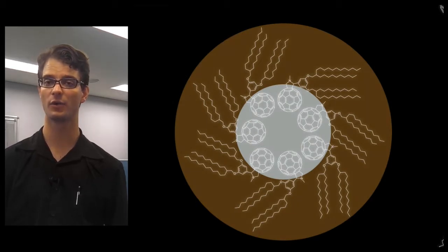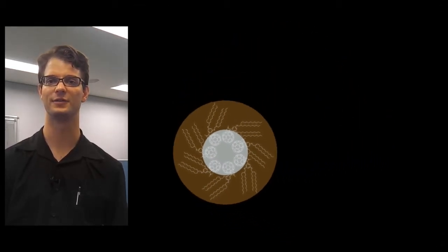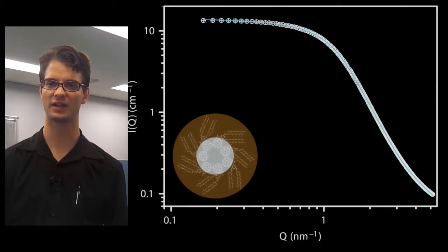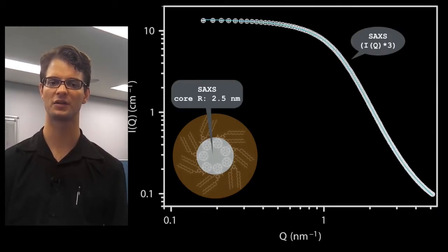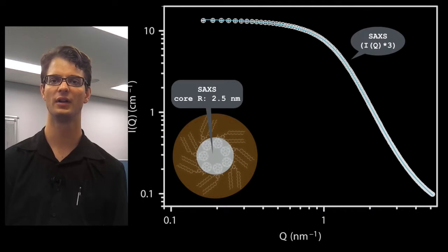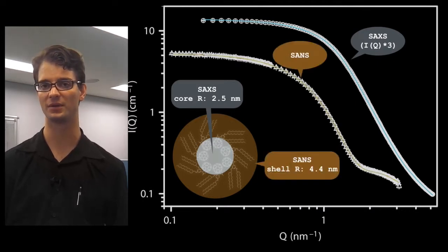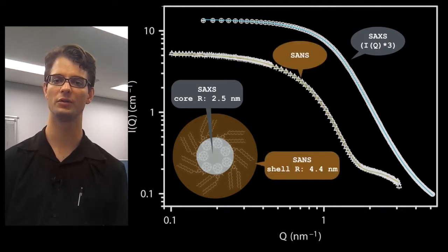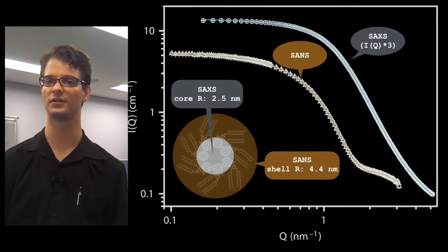We can use small angle X-ray and neutron scattering to investigate these. Small angle X-ray scattering was used to investigate the core structure of this core-shell micelle, and small angle neutron scattering, due to its different contrast, could be used to investigate the shell structure of this core-shell micelle.